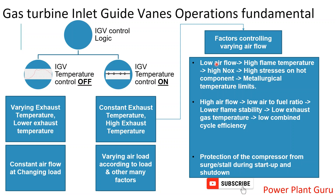This is how, on a broad level, you can understand how IGV operates. There are many other minute factors — such as the temperature control constants and the isothermal temperature limit — which we can discuss in another video. Another point is that the IGV also modulates during startup and shutdown. During startup, if too much air is admitted, it will not allow the flames to stabilize and the flame will be extinguished. That is why IGV is controlled carefully during startup.